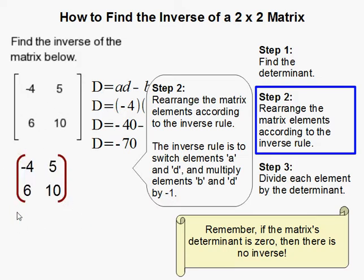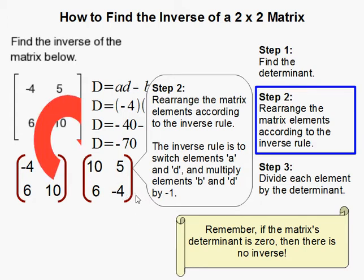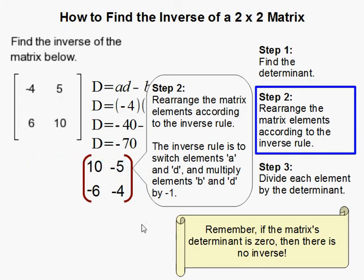So this is the original, and this is the rearranged matrix. Right? So I switch these two guys. You see that? So negative 10 went over there, negative 4 went over there, and then boop, put in my negatives.